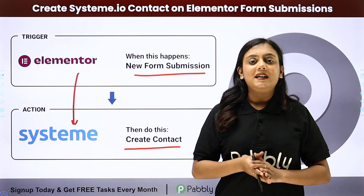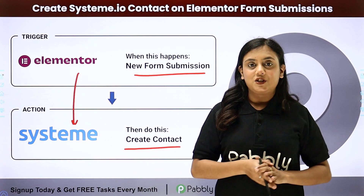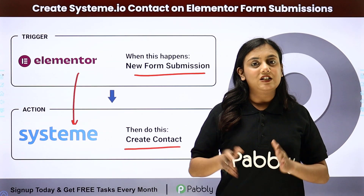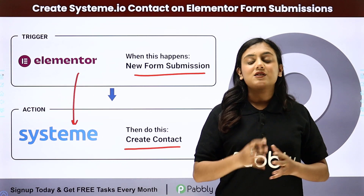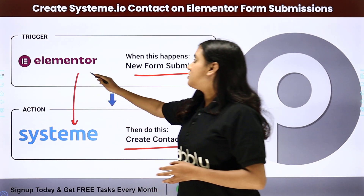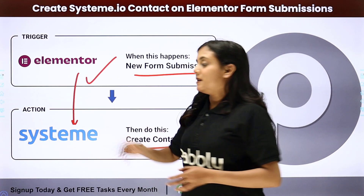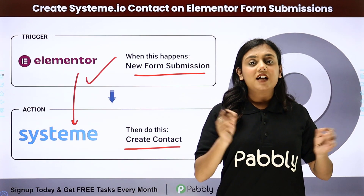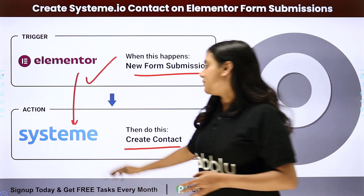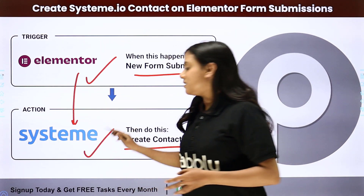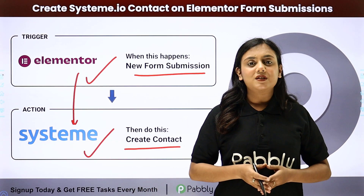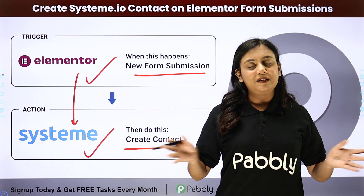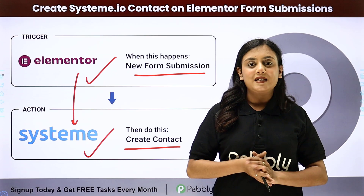In Pabbly Connect, to start an automation process we need a trigger and actions. In this process, my trigger application is going to be Elementor and my action application is going to be Systeme.io. If you want to learn how to do this automation, let me take you to my screen.